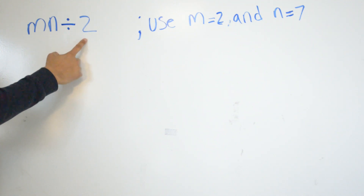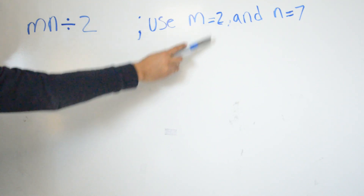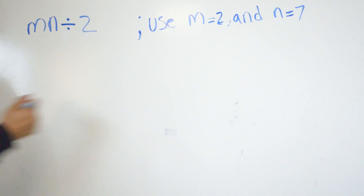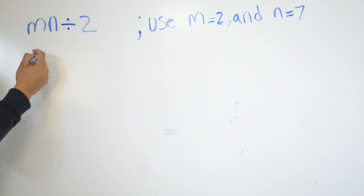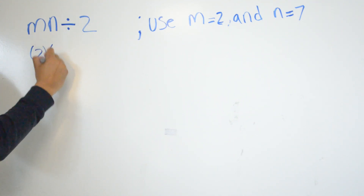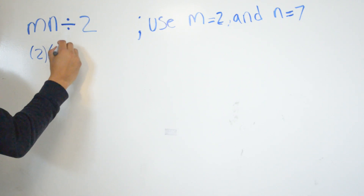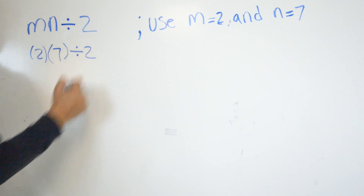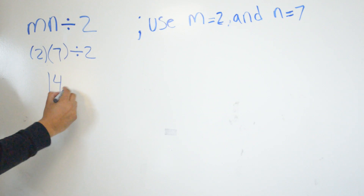In this problem we're solving m times n divided by 2. The numbers given to us are m equals 2 and n equals 7. So we plug in the numbers — wherever we see m we put 2, and wherever we see n we put 7. So it's 2 times 7 divided by 2. We do 2 times 7, which is 14, divided by 2, giving us 7.